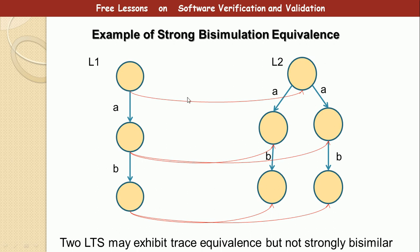Let's take an example to clarify. These two LTS exhibit strong bisimulation equivalence. Let's trace through the diagram: the first step on L1 is a; the first step on L2 is also a, taking us to the same point. All the steps from L2 — which is a — take us to the same point where we can start the same transition again. From here to here we have b; from this place to this place we have b — which is the same. So for every transition, the two arrive at exactly the same corresponding states.